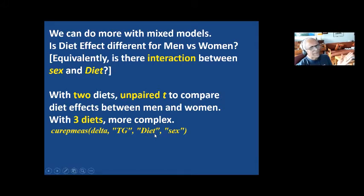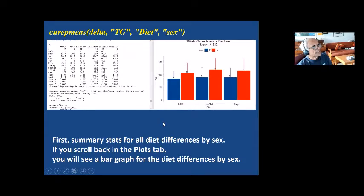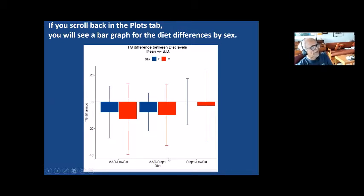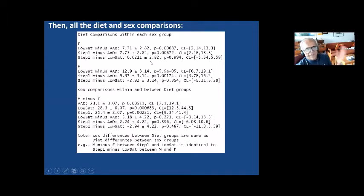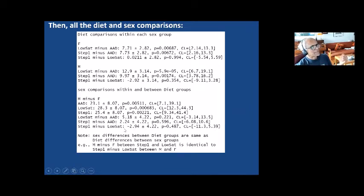You get summary stats for all the diet differences by sex, and in the plots you get the three diets with two sexes within each diet. If you scroll back, you'll see the three possible diet effects, each for women and men separately. In the console, you have all the comparisons: within women — what are the three diet effects? Within men — what are the three diet effects? And then what is the sex effect in each diet, and how do the diet effects compare between the sexes? The p-values for sex differences in diet effects are mostly non-significant — basically saying there isn't any meaningful sex interaction.